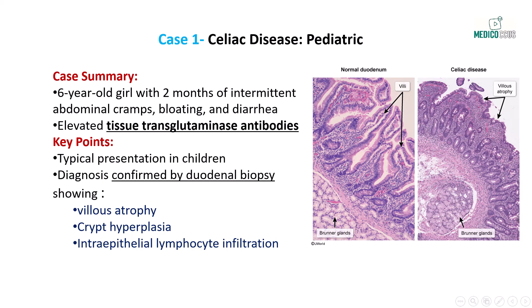The diagnosis is confirmed by duodenal biopsy, which reveals characteristic findings such as intraepithelial lymphocytosis, villus atrophy, and crypt hyperplasia. This case emphasizes the importance of recognizing these clinical and histological features, which are frequently tested on the USMLE.